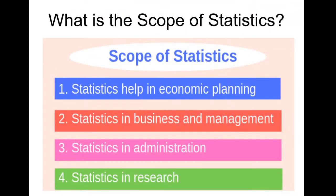What is the scope of statistics? The scope of statistics covers four areas: statistics help in economic planning, statistics help in business and management, it will help in administration, and it will be very helpful in research too.